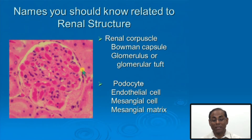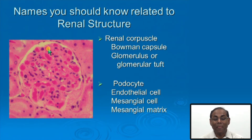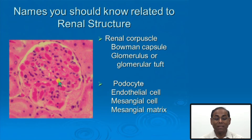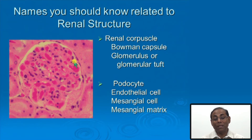Under the light microscope, a glomerulus shows red blood corpuscles inside the capillary lumen. Between capillary lumens is the mesangium, normally with one to three cells — confirming a normal glomerulus. Podocytes can also be seen outside the capillary loop. The Bowman's space is visible, and the flattened cells lining it are the parietal epithelial cells. This is the structural appearance of a normal glomerulus under light microscopy.